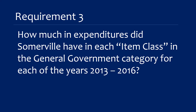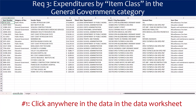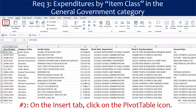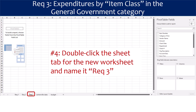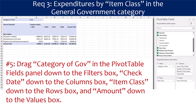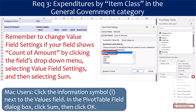Requirement 3 reads: how much in expenditures did Somerville have in each item class in the General Government category for each of the years 2013 to 2016? Click anywhere in the data in the data worksheet. On the Insert tab, click on the pivot table icon. Accept the defaults by clicking OK. Double-click the sheet tab for the new worksheet and rename it Requirement 3. Now drag Category of Government in the pivot table fields panel down to the Filters box, drag Check Date down to the Columns box, Item Class down to the Rows box, and Amount down to the Values box. Remember to change the value field settings if your field shows count of amount by clicking the field's drop-down menu, selecting Value Field Settings, and selecting Sum.